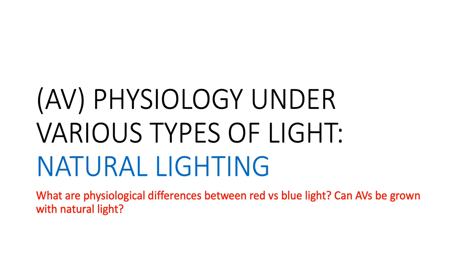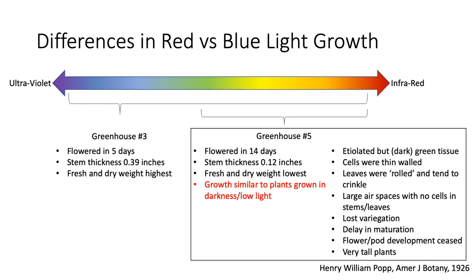That's it for the lighting parameter discussion. We will next discuss the physiological differences of plants grown under natural lighting, and look at the differences when plants are grown under red versus blue light. About 100 years ago, a botanist came up with a clever idea to look at how plants respond when certain parts of the spectrum were eliminated.